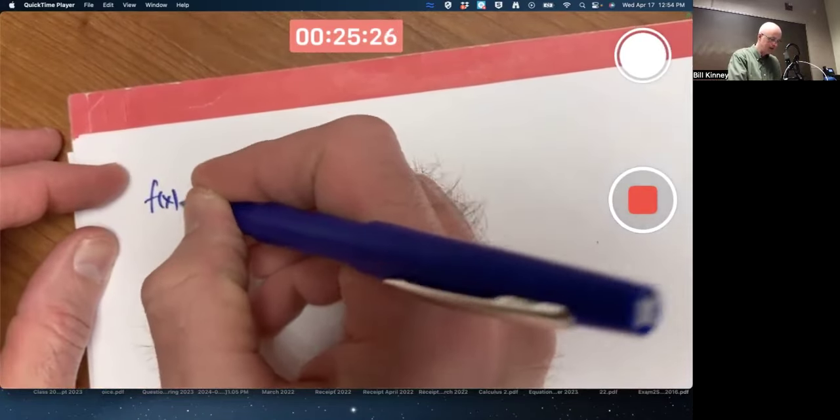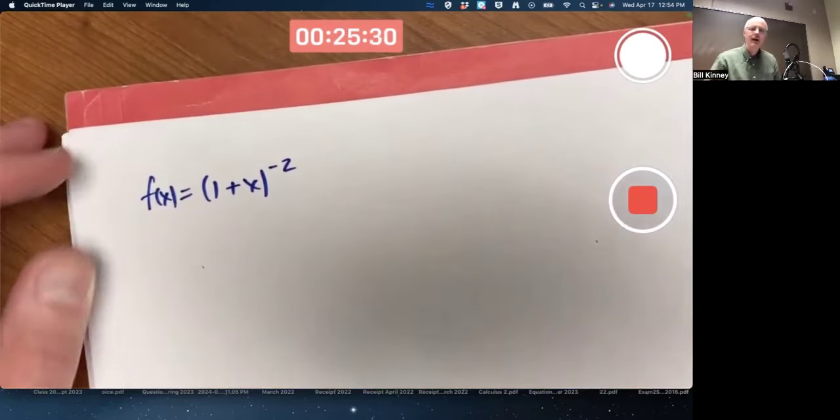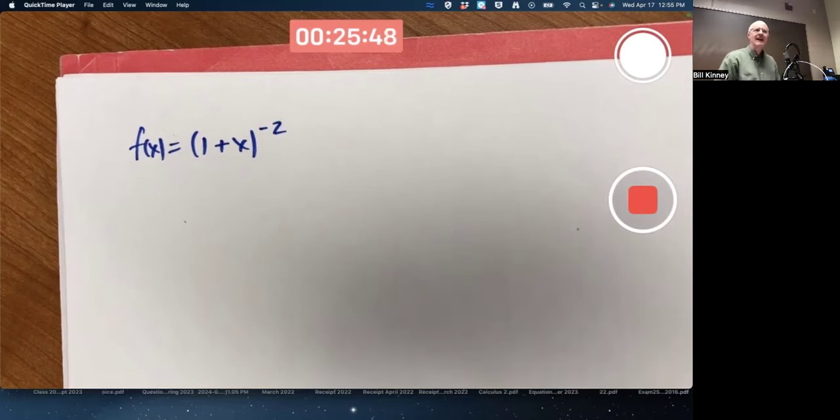Next example, f of x equals 1 plus x to the negative 2 power. I'm going to figure out the Taylor series for this in three different ways and get the same answer each way. It'll be like magic. A mathemagician. So there is somebody who calls himself a mathemagician, so it might be trademarked. But anyway.